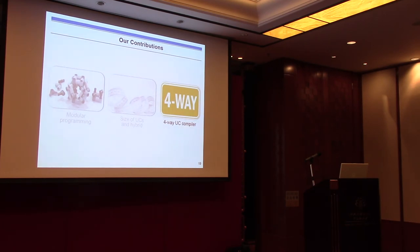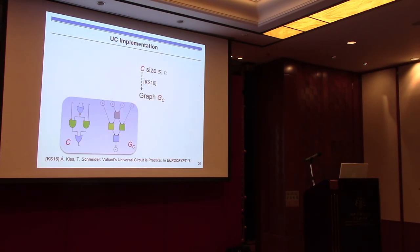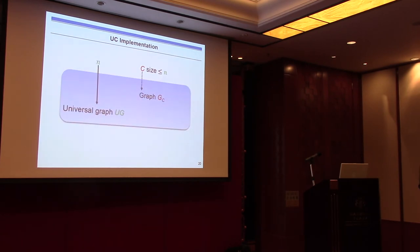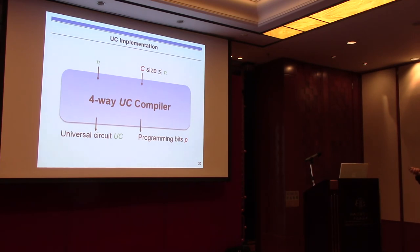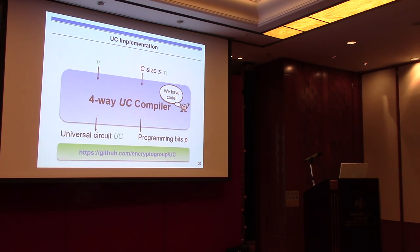We implemented this universal circuit construction to verify correctness. The implementation uses the first step from the existing UC implementation from 2016 to generate the circuit graph. Then, for the circuit size, we generate the universal graph using the four-way construction, embed the circuit graph into it, and output the UC and programming. This is our four-way UC compiler, and the code is available open source online.